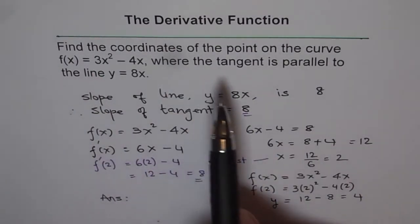So we can write down our answer: the coordinates of the point on the curve f(x) = 3x² - 4x where the tangent is parallel to the line y = 8x are (2, 4).